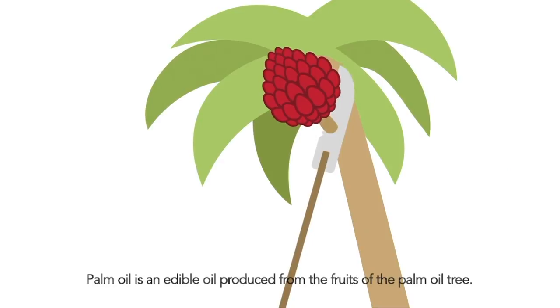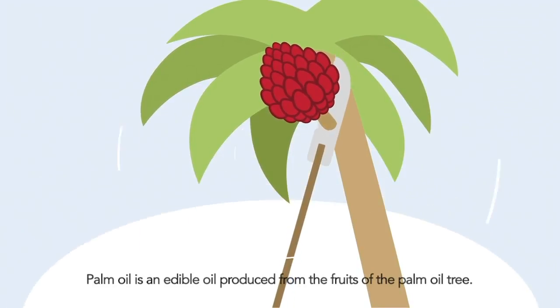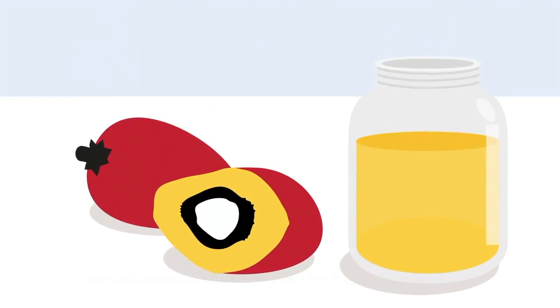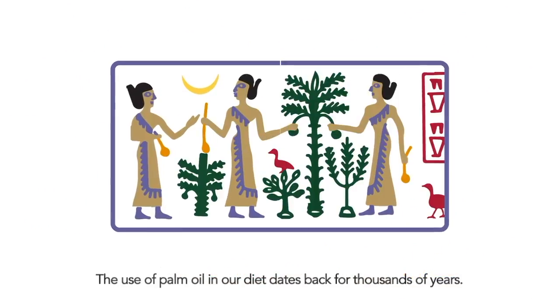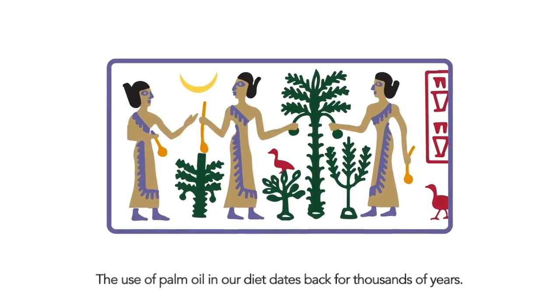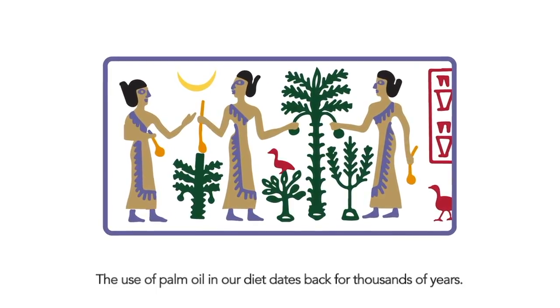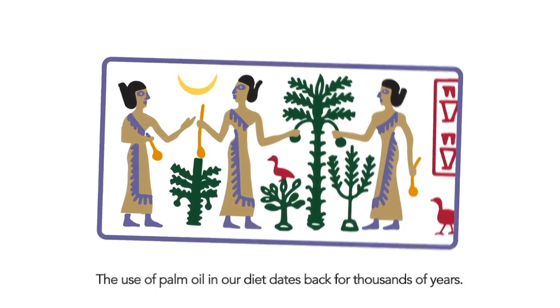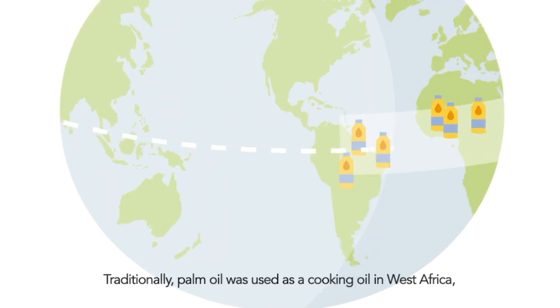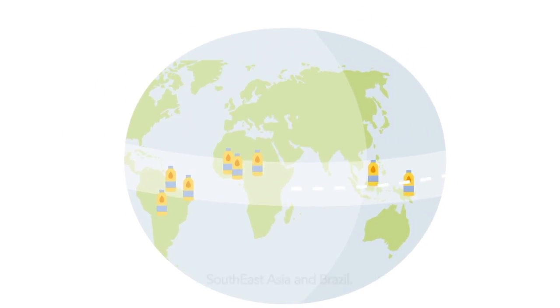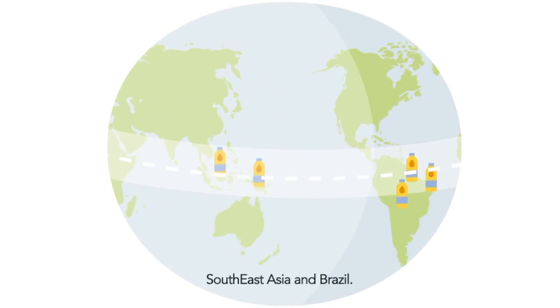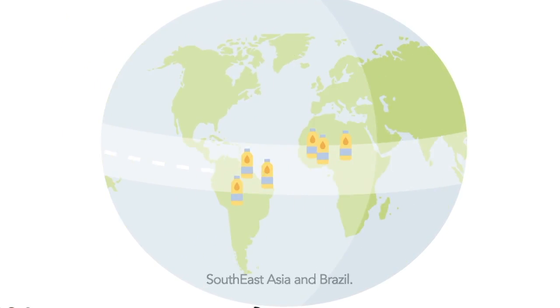Palm oil is an edible oil produced from the fruits of the palm oil tree. The use of palm oil in our diet dates back for thousands of years. Traditionally, palm oil was used as a cooking oil in West Africa, Southeast Asia and Brazil.